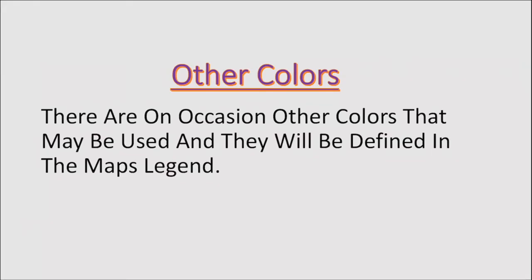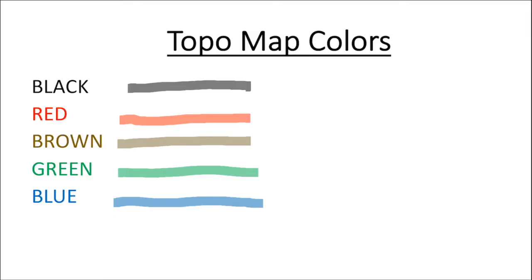There may be other colors on a map, and if there are, they'll be designated in the legend showing what they mean or what they represent on that particular topo map. And there you have it — the five basic colors: black, red, brown, green, and blue. Any additional colors will be defined in the legend.